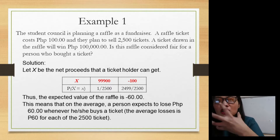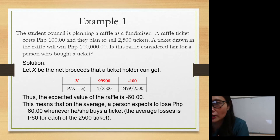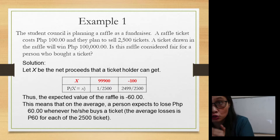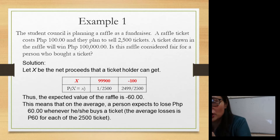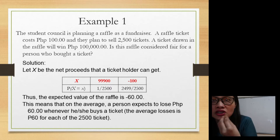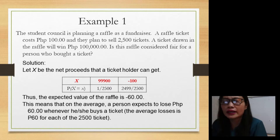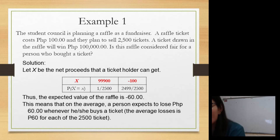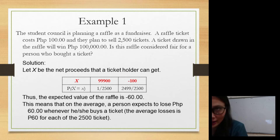Now, to solve for the expected value, you just multiply 99,900 by 1 over 2,500, plus negative 100 multiplied by 2,499 over 2,500. So your expected value is negative 60 pesos. This means that on average, a person expects to lose 60 pesos whenever he or she buys a ticket.